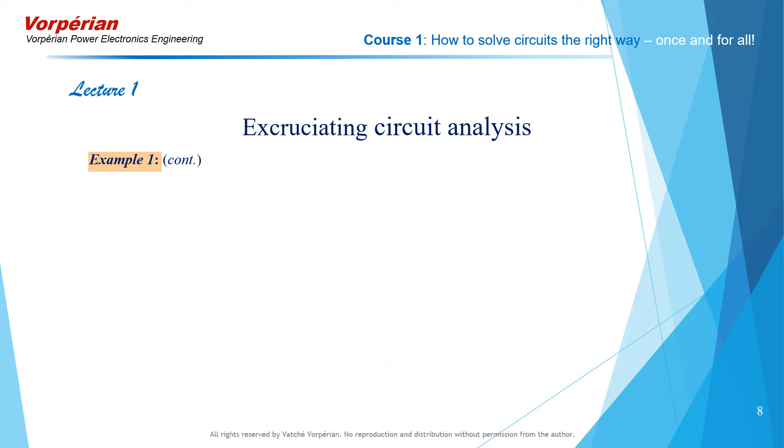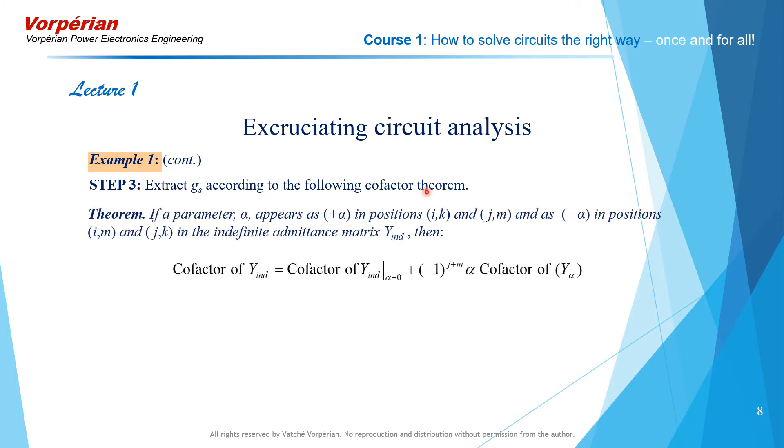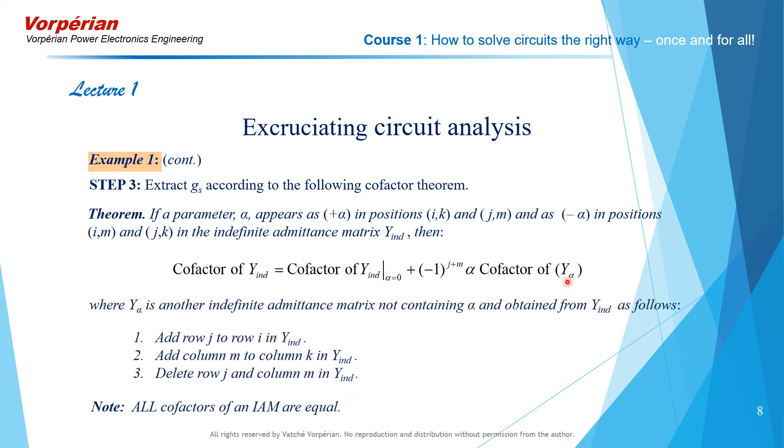We now extract Gs according to the following cofactor theorem. The theorem says if a parameter alpha appears as plus alpha in positions (i,k) and (j,m) and as minus alpha in positions (i,m) and (j,k) in the indefinite matrix, then the following relation is true. In the last term here, cofactor of y sub alpha,